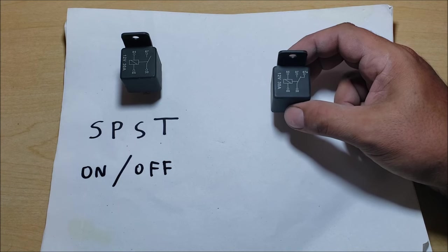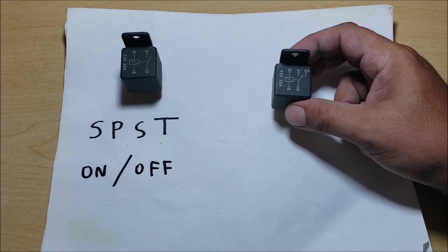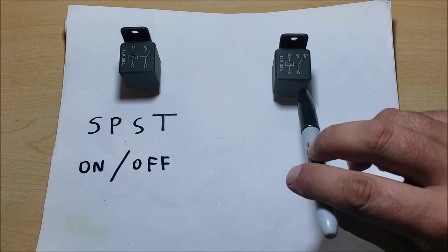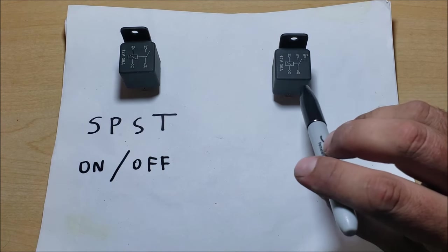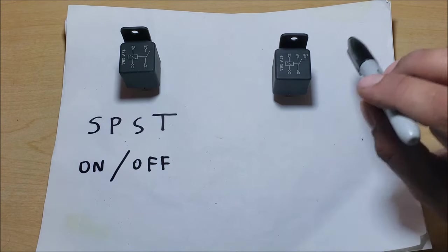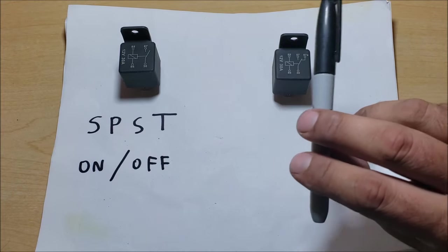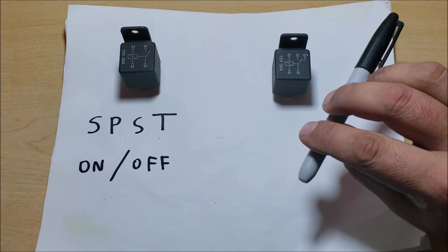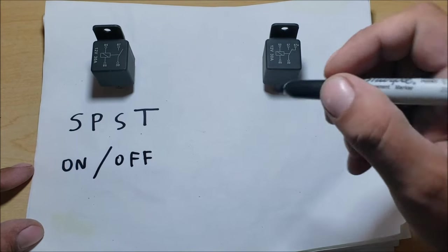You want to call this a single pole double throw switch, but it's actually not because there's no off position. Think of your signal lights in your car, that's a single pole double throw switch with off in the middle. So I do not call this a single pole double throw switch because there is no off. You are either sending power straight from 30 to 87a straight power, and then when you energize the electromagnet it's switching.